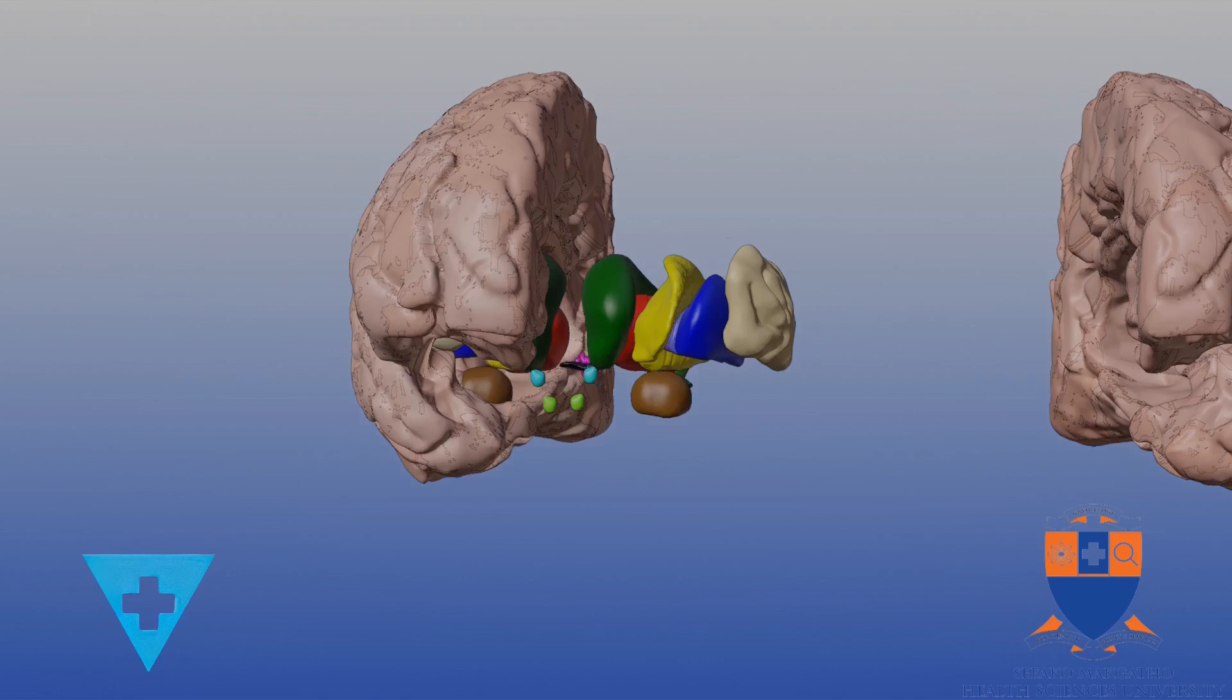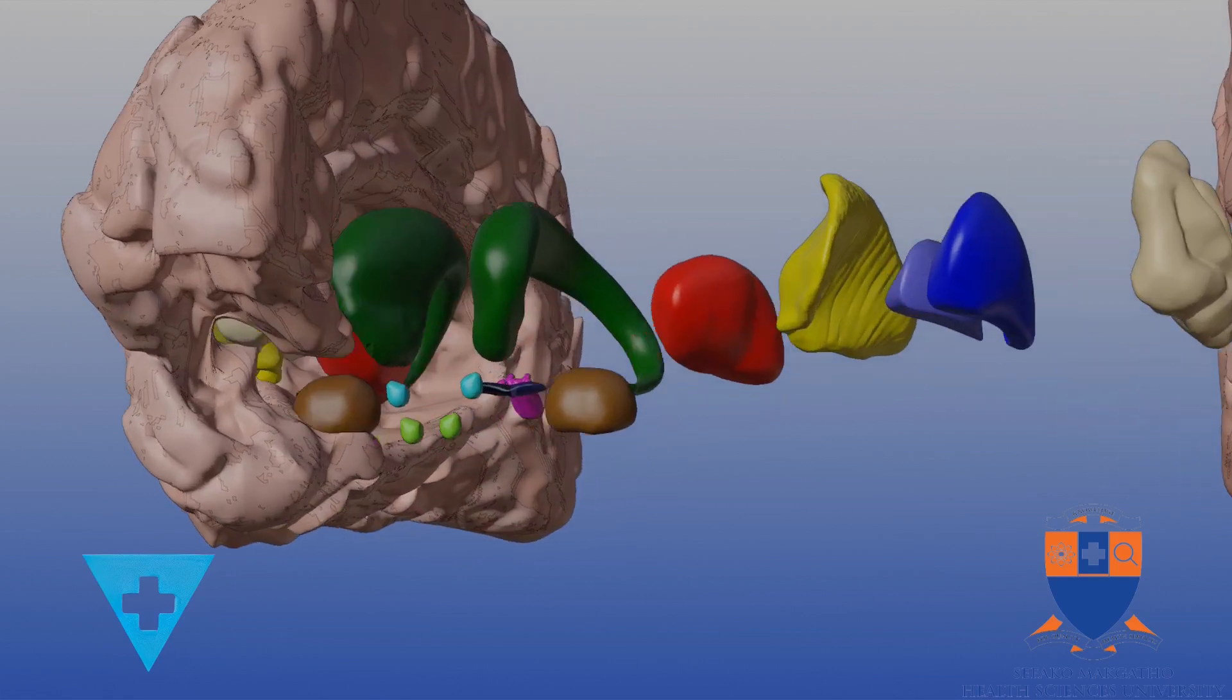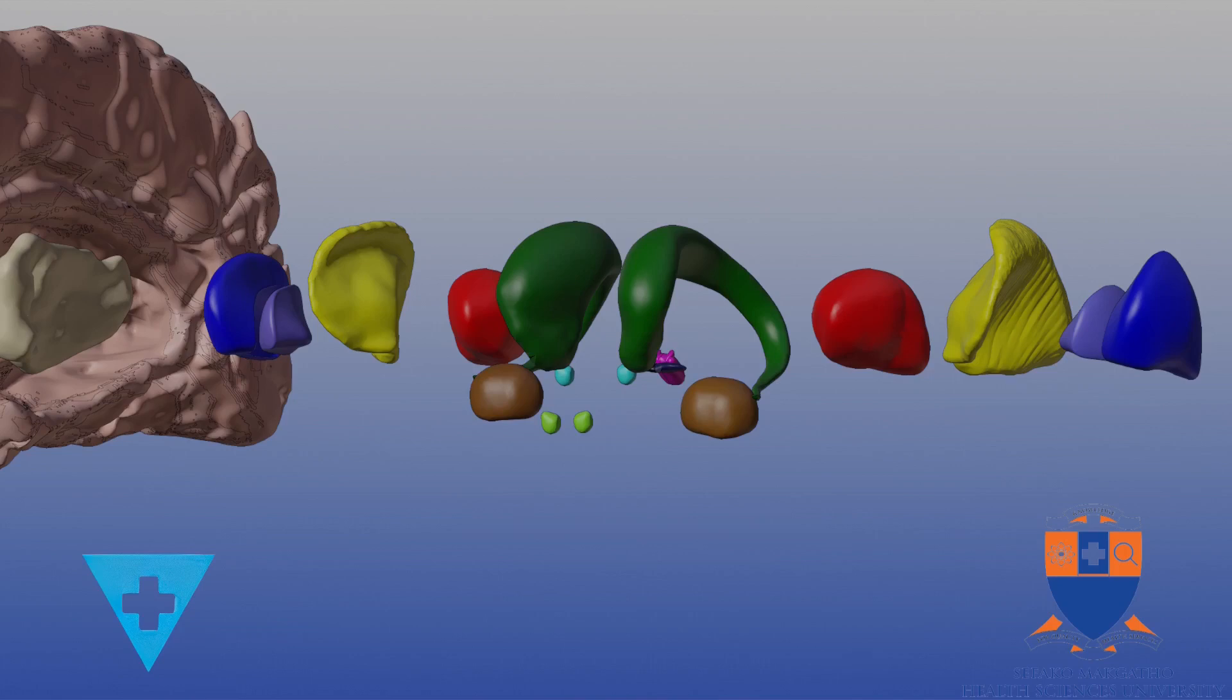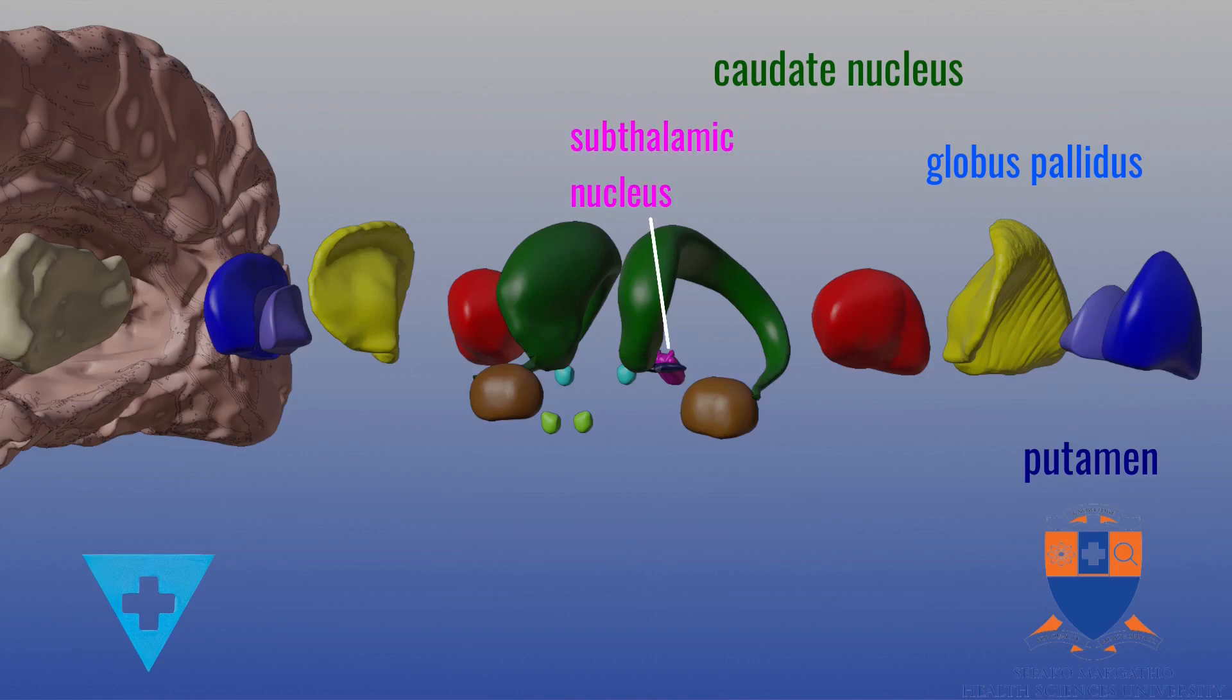The word ganglia refers to the collection of neuronal bodies or nuclei of grey matter. The basal ganglia includes the caudate nucleus, putamen, the globus pallidus, the subthalamic nucleus, the substantia nigra, nucleus accumbens, and the olfactory tubercle.